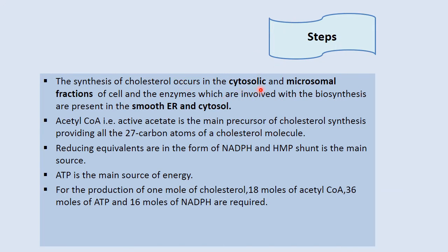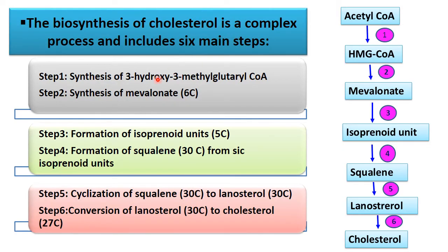The synthesis of cholesterol occurs in the cytosolic and microsomal fractions of the cell. The enzymes involved are present in the smooth endoplasmic reticulum and cytosol. Acetyl coenzyme A is the main precursor. Cholesterol has 27 carbons while acetyl-CoA has 2 carbons. The reducing equivalents used are NADPH from the HMP pathway. For one mole of cholesterol: 18 moles of acetyl-CoA, 36 moles of ATP, and 16 moles of NADPH are required.